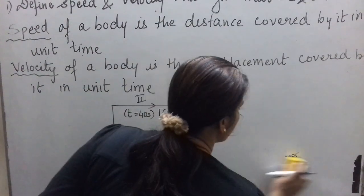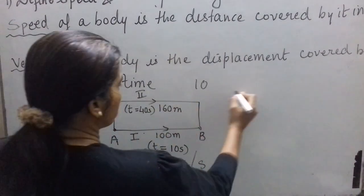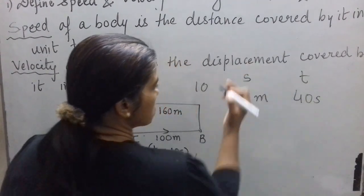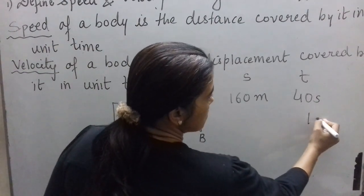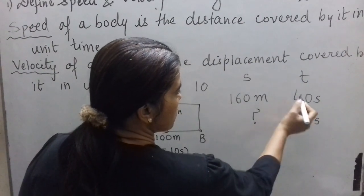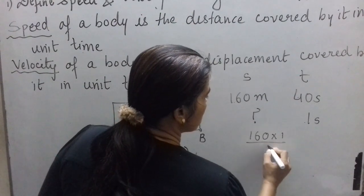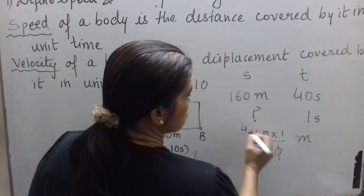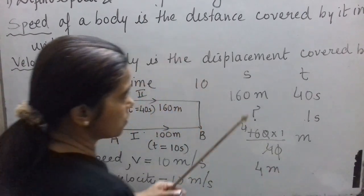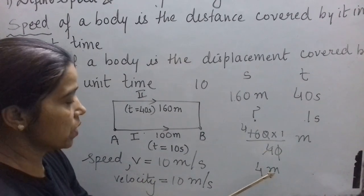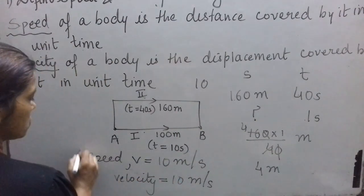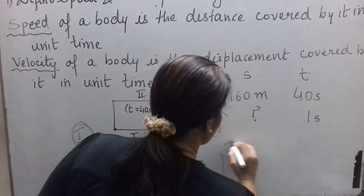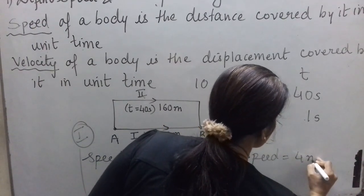Now for the second person: distance covered is 160 meters in 40 seconds. In unit time — 1 second — the distance covered is 160 × 1 ÷ 40 = 4 meters. So the speed of the second person is 4 meters per second.